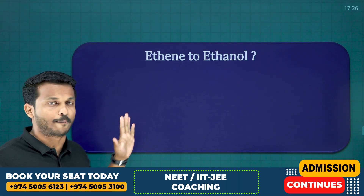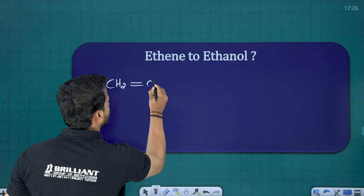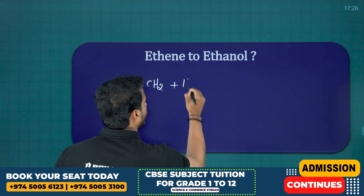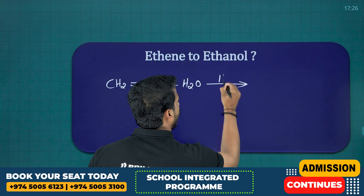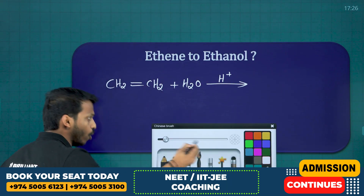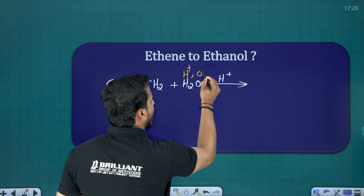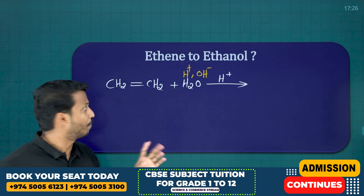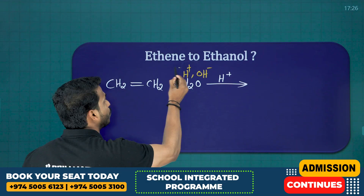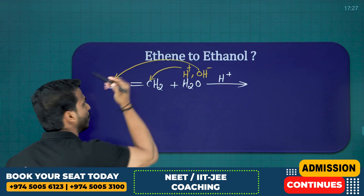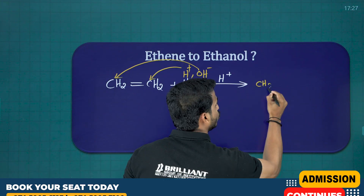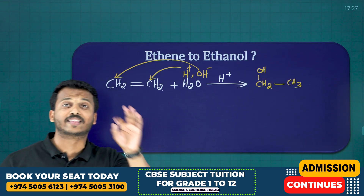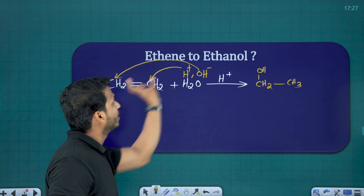Let's see what basically happens. Ethene is CH₂=CH₂. To this alkene, we are adding H₂O in the presence of an acid catalyst. You know there are two ions in H₂O: H⁺ and OH⁻. Since this is a symmetrical alkene, Markovnikov's rule is not applicable here. So we add H⁺ to one carbon and OH to the other carbon. What you get is CH₂OH and CH₂ becomes CH₃ — that is ethanol.